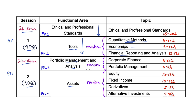When you get to the PM exam, functional area three is portfolio management and analysis, which includes corporate finance and portfolio management. So you may have one from corporate finance, followed by one from portfolio management, then back to corporate finance, and so on. They'll be randomized just within these two topic sections.